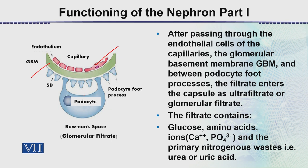There are podocytes which are specialized cells. The filtrate enters the Bowman's space — this is the glomerular filtrate. The filtrate contains glucose, products of digestion such as amino acids, ions like calcium and phosphate, and the primary nitrogenous wastes which are urea and uric acid.